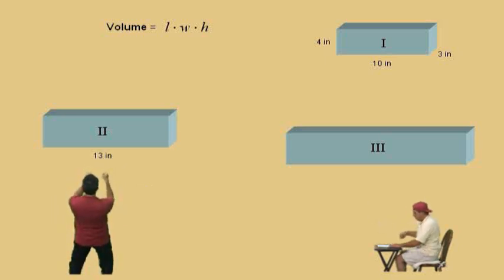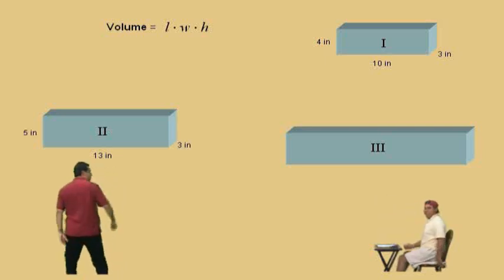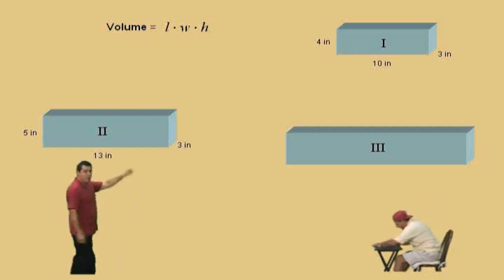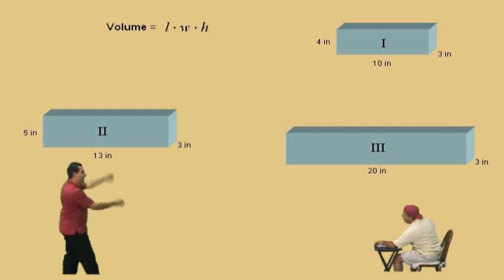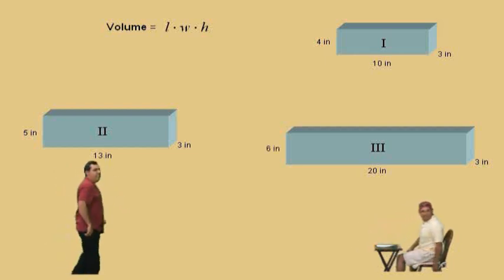What's the length? Thirteen. And the width? Three. And the height? Five. There you go, Charlie. Okay, now we've got to do this third one over here, Charlie. Give us the length? Twenty. And the width? Three. And the height? That would be six. Very nice, Charlie.